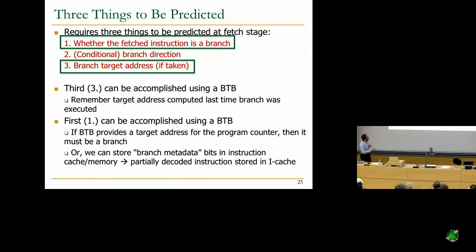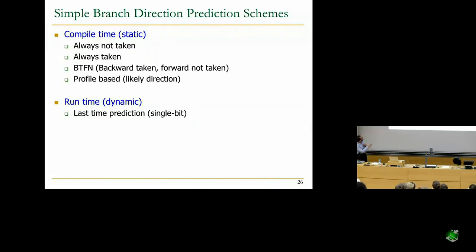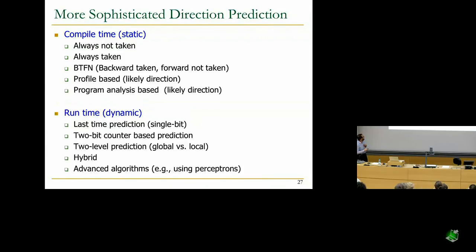How do we predict the direction? We're going to look at a bunch of different direction prediction mechanisms. Some will be static, more advanced ones will be dynamic. We've already seen always-not-taken; we're going to study it again. That will hopefully be the end of this lecture.